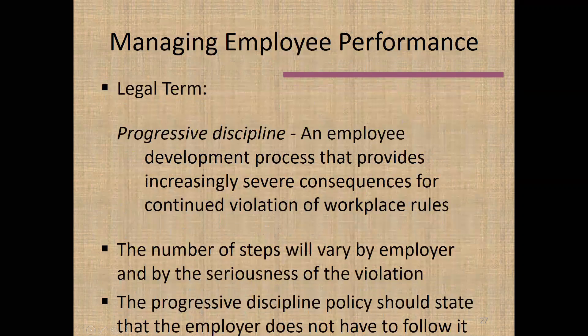Let's talk about progressive discipline — a really smart system to have, and most larger employers build it into their HR systems. Progressive discipline is a system that provides increasingly severe consequences when a particular rule keeps getting violated. The number of steps varies by employer, typically two to four steps. However, certain offenses — like theft or violence in the workplace — may result automatically in termination. You would fire somebody the first time you're persuaded that has happened. So progressive discipline works for certain situations, but by no means every situation.